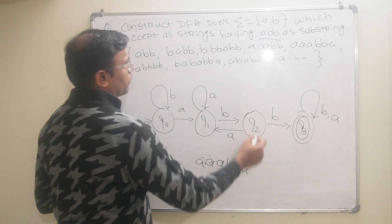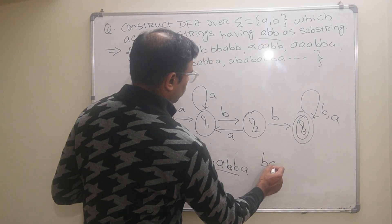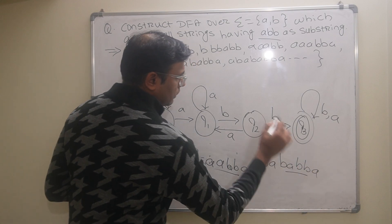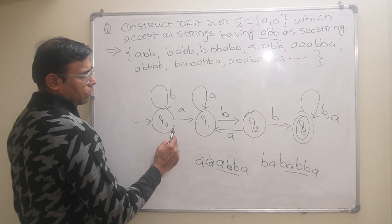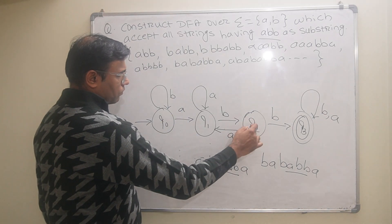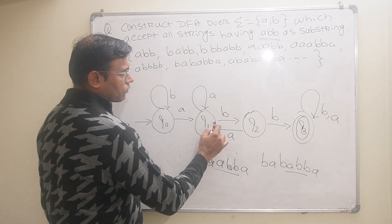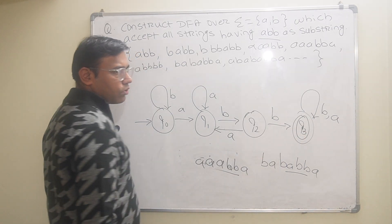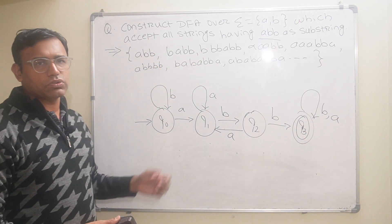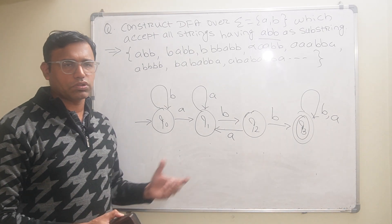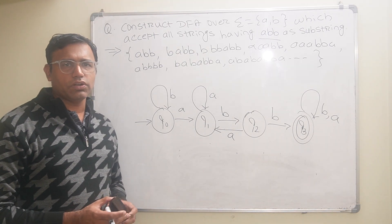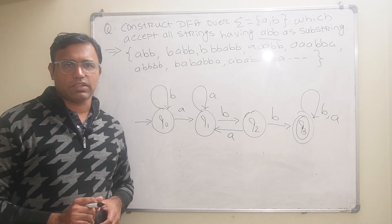The last possibility is BABABB — tracing B, A, B, A, B, B — the DFA accepts ABB as a substring correctly. All possibilities are now covered. This is the final DFA which accepts ABB as a substring. That's it for this video — if you like the video, please subscribe, like, and share. Thank you.